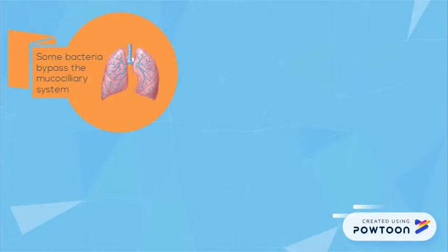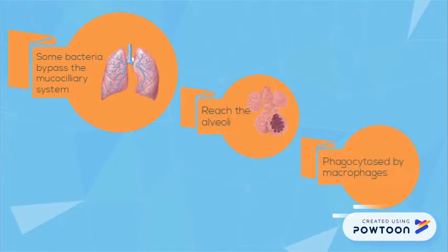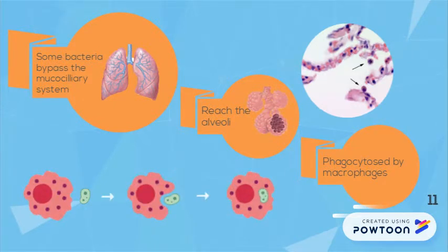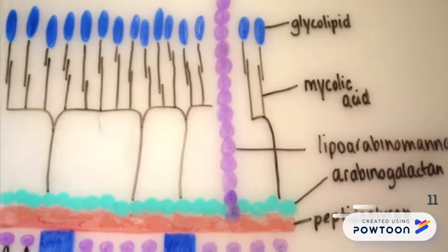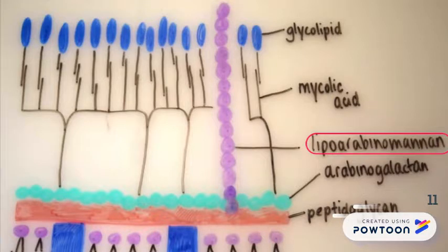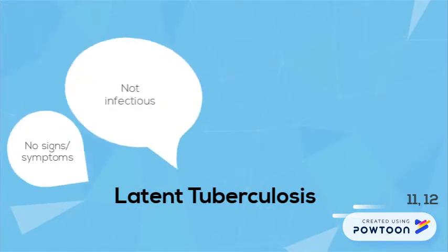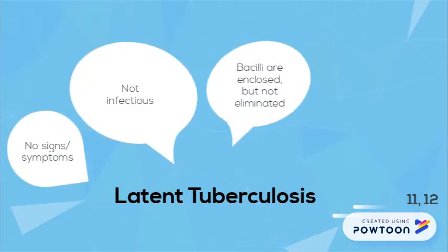Bacteria that bypass the mucociliary system to reach the alveoli are phagocytosed by macrophages present in alveolar spaces. Lipoarabinomannan plays a key role as a ligand for macrophage receptors, enhancing recognition of the mycobacteria. If the bacilli are phagocytosed and neutralised, the person does not become sick. This is latent TB — the patient has no signs or symptoms and is non-infectious, as bacilli are enclosed.